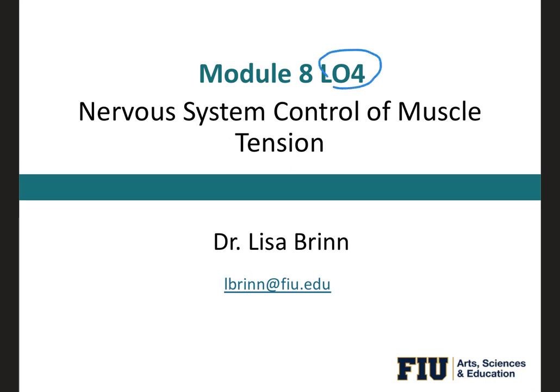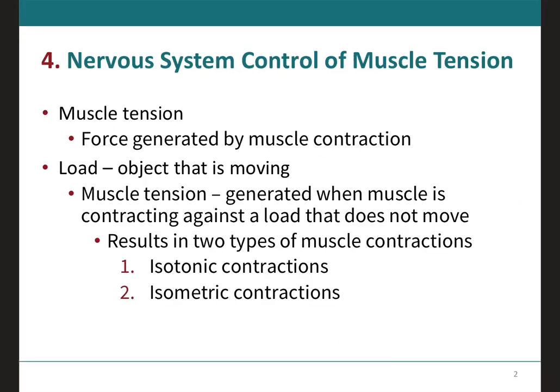For learning outcome number four in module eight, we're going to be talking about how the nervous system will control the muscle tension. To be able to move an object, which is referred to as a load, the sarcomeres — which are the functional unit of the muscle fibers — are going to have to shorten, and the force generated by the contraction of the muscle, or the shortening of the sarcomeres, is what we call muscle tension.